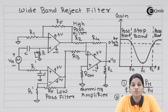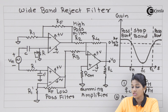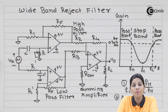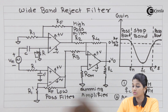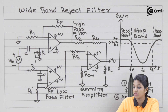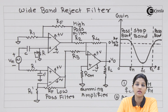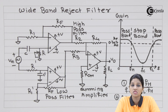The high pass filter allows only higher band frequencies and rejects all frequencies below its FC, whereas the low pass filter allows all lower band frequencies and rejects all frequencies above its FC. Here, the FC value for the low pass filter is FH and the FC value for the high pass filter is FL. When we combine the two frequency responses, we get the frequency response of the wide band reject filter. Frequencies between FH and FL are rejected and fall in the stop band, whereas frequencies from 0 to FH and above FL fall in the pass band. This is how the frequency response of the wide band reject filter is obtained, with one stop band and two pass bands.